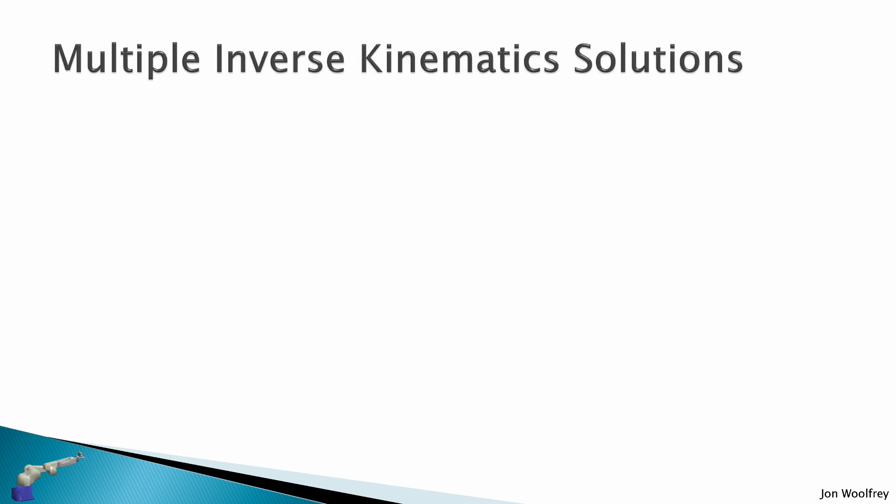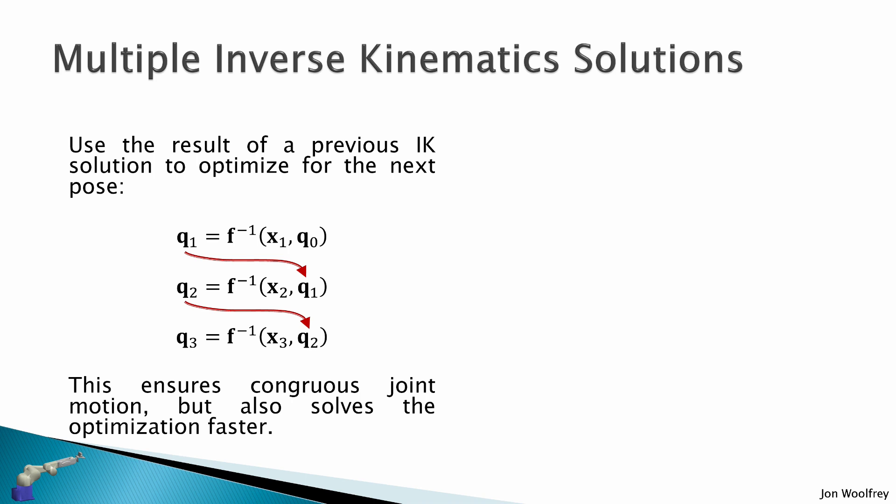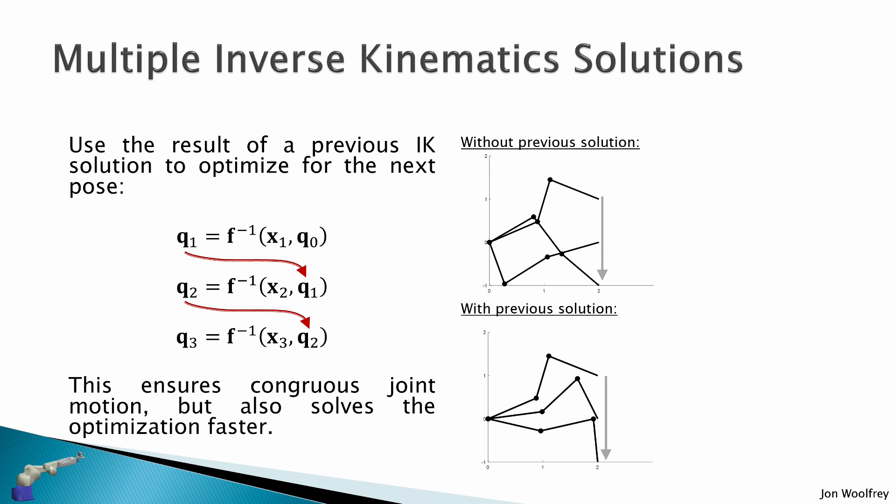When we're solving multiple inverse kinematics solutions, what we need to do is use the result of the previous inverse kinematics to optimize for the next pose. So we have q1 for our initial guess q0, and then for q2 we just plug in q1 as our next initial guess. And our initial guess for the third pose will be using q2. This ensures congruous joint motions, but also solves the optimization faster. So in this diagram here, I want the end effector to move downwards, but I haven't used the previous solution, and you can see that the robot configuration is all over the place, so it's not going to be a smooth joint motion. Here with this one, I've used the previous solution, and so the joint configurations are much more congruous, and the joint motion will be much smoother.